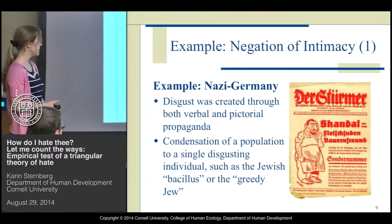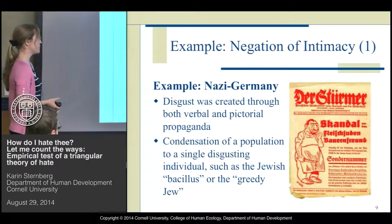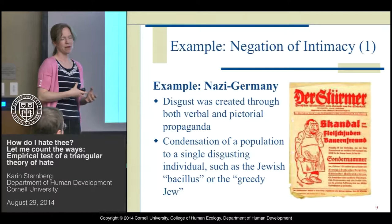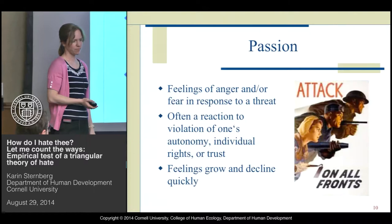As an example, in Nazi Germany, disgust was created through verbal and pictorial propaganda. The Jewish population was condensed into a single individual described as disgusting and revolting — for example, referred to as the 'Jewish bacillus' or the 'greedy Jew.'